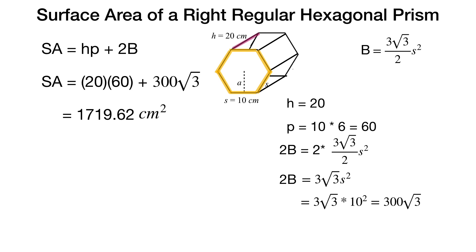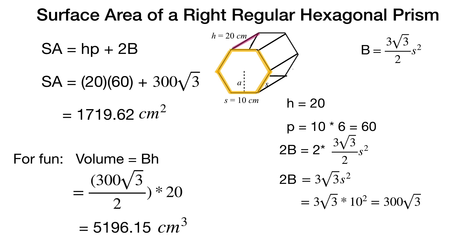Just briefly, let's also talk about volume. The volume of a prism is uppercase B times H — area of the base times the height of the prism. Uppercase B is 300√3 over 2, because in the surface area formula it was 2 uppercase B equaling 300√3, so one uppercase B is half of that. Height is still 20. Carefully put that in your calculator and you get the volume in cubic centimeters — cubic units because it's volume.